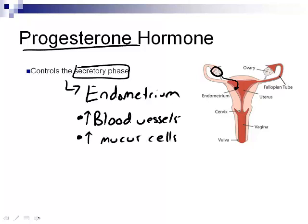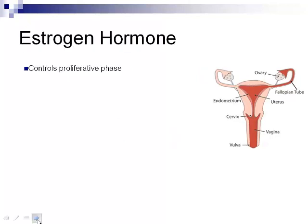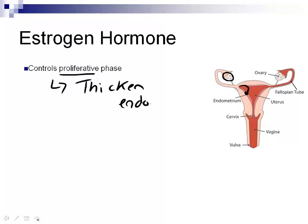The endometrium also needs mucus cells. Regular skin-like cells are converted into goblet cells, which secrete mucus. Estrogen, also secreted by the follicle in the ovary, targets the endometrium during the proliferative phase — when things proliferate, they grow — so estrogen causes the endometrial wall to thicken.